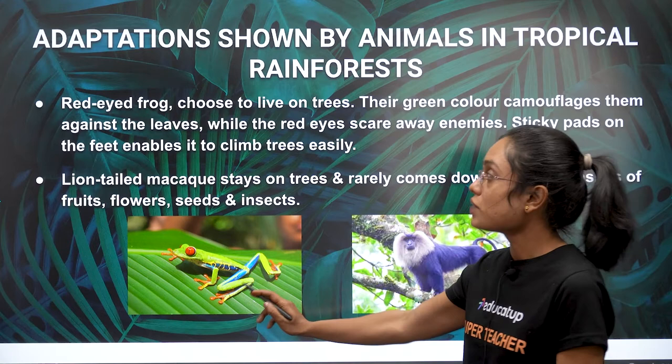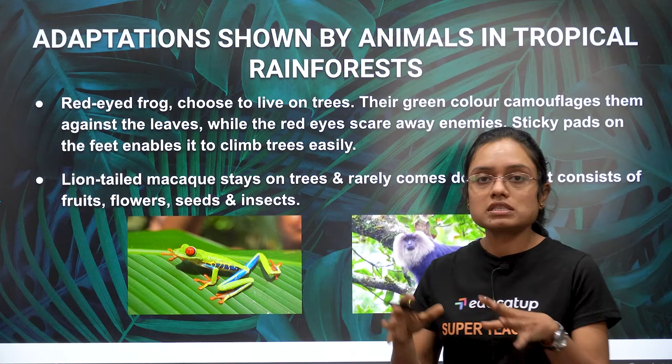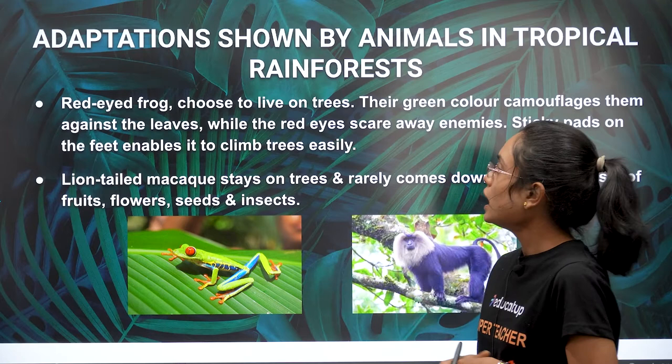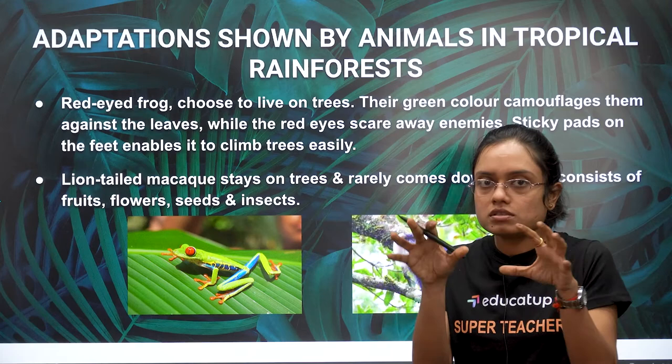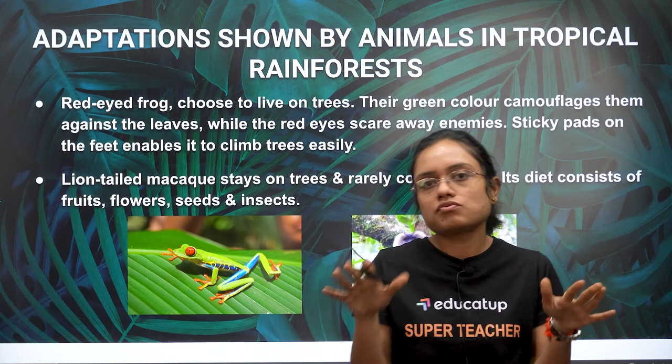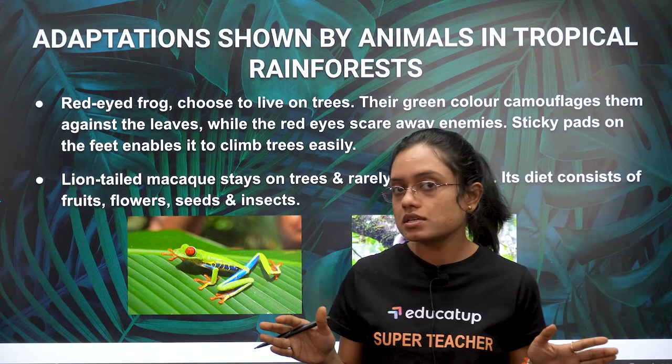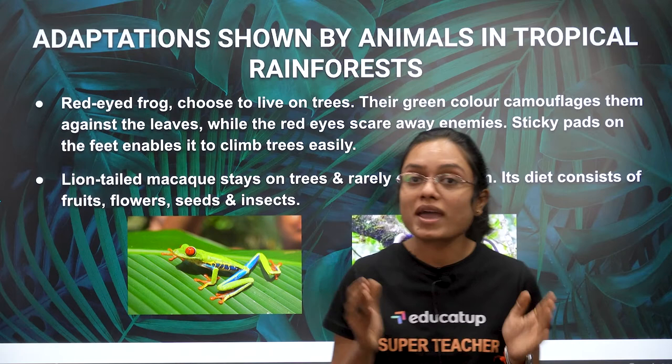The red-eyed frog adapts to the tropical rainforest in several ways: its green color camouflages it against leaves on the trees where it lives, making it nearly invisible. Its bright red eyes scare away enemies. Its specialized feet enable it to climb trees easily. These adaptations — green color, red eyes, and climbing feet — all help in its survival.